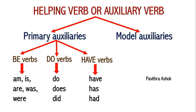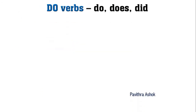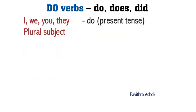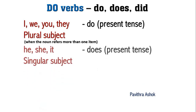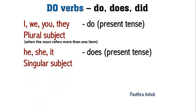In this session we are going to understand do verbs. Now please listen carefully. If the subject is I, we, you, they, or a plural subject, we use 'do' in present tense. A plural subject is when the noun refers to more than one item. If the subject is he, she, it, or a singular subject, we use 'does' in present tense. A singular subject is when the noun refers to one item.